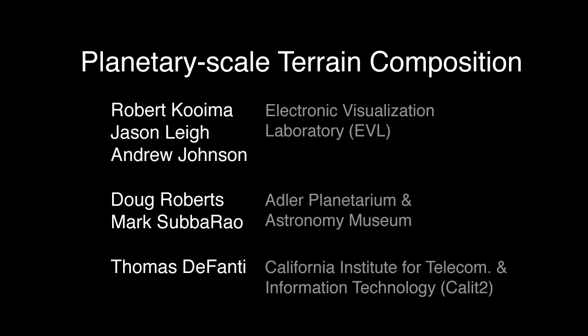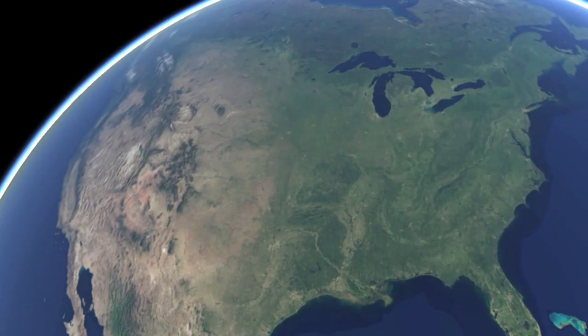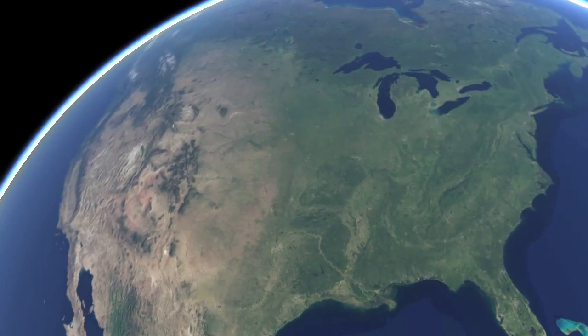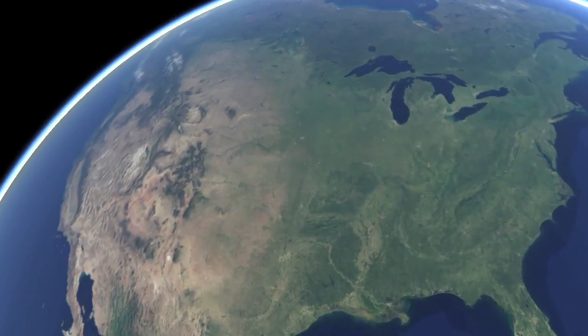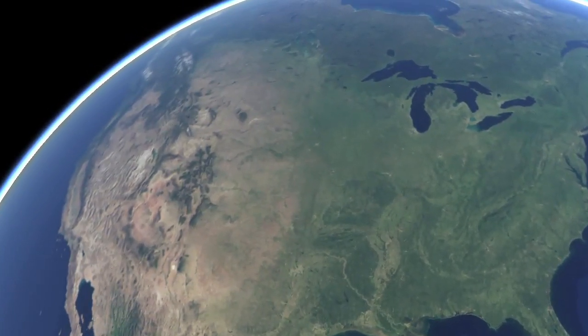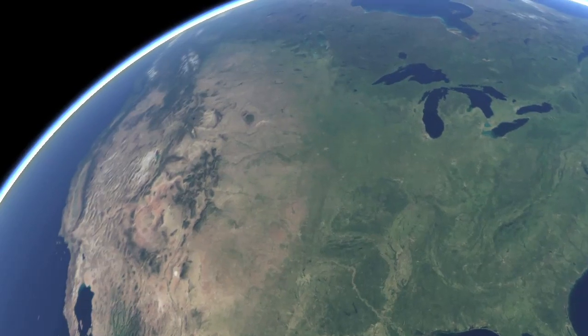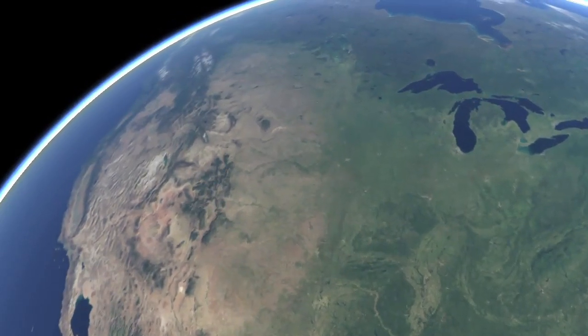This video demonstrates the planetary scale terrain composition algorithm. We overlay the National Elevation Database, a 17-gigapixel height map covering the United States at 30 meters resolution, with the Shuttle Radar Topography Mission, a 3-gigapixel height map covering the world at 500 meters.